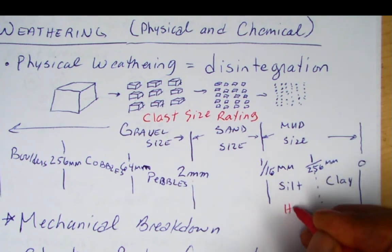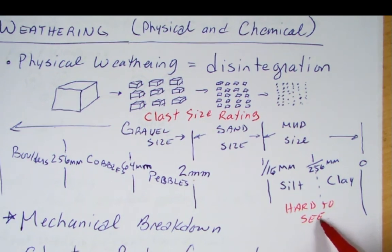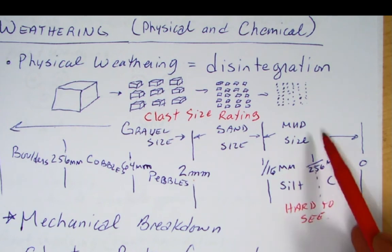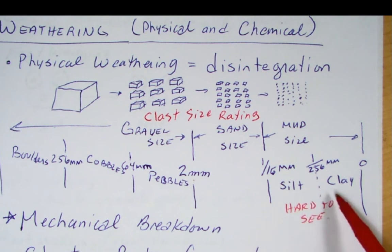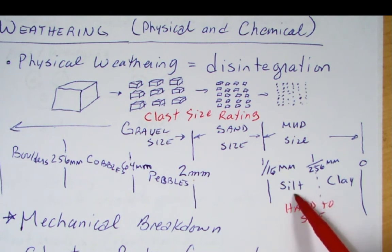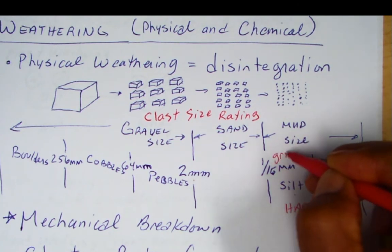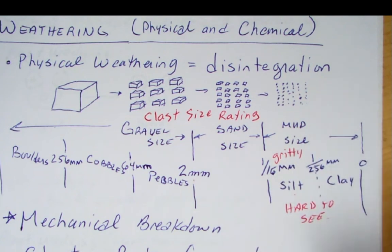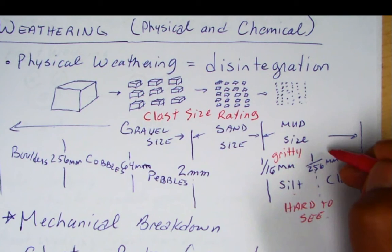Once you get down to one sixteenth of a millimeter, this is hard to see. You would need a microscope or hand lens to see the grains. And then there is a distinction within this mud size between silt and clay. Silt is gritty and clay will be smooth. You can feel the gritty silt material especially if you rub the rock, even though it would be hard to see the individual grains, whereas clay is smooth.